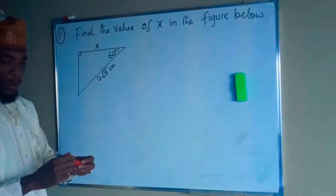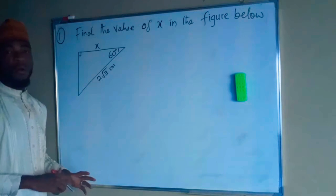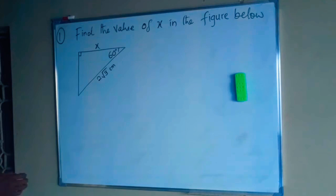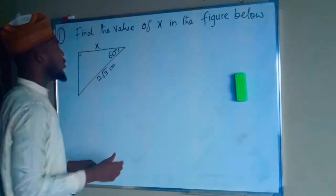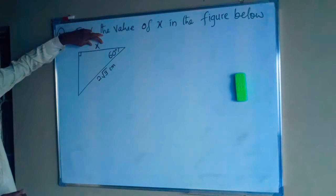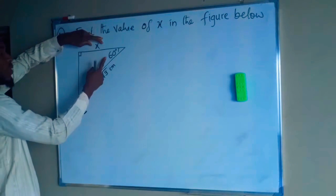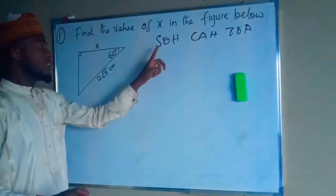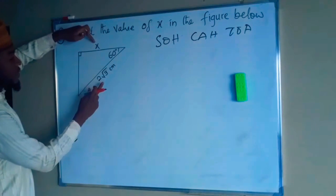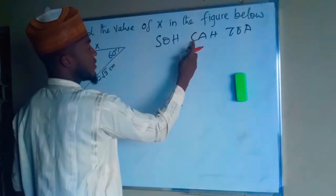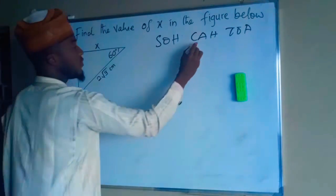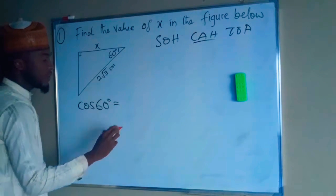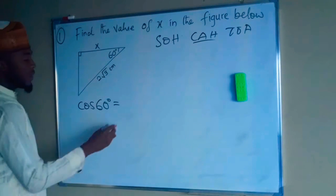Good afternoon. I have about seven questions set by YEC. The first question asks us to find the value of X, which is adjacent to a 60-degree angle. Remembering SOHCAHTOA, since we only have the adjacent and hypotenuse, we use cosine. So cos of 60 degrees equals adjacent divided by hypotenuse.